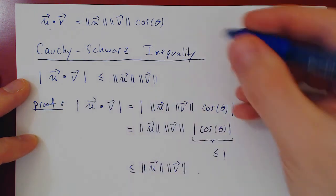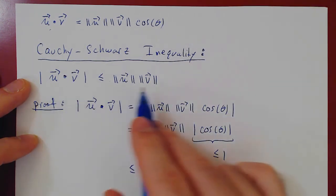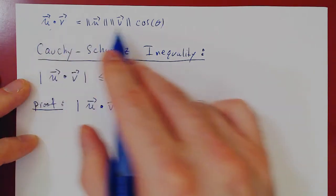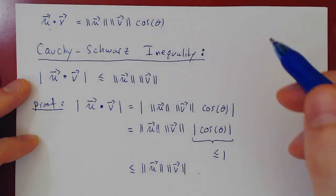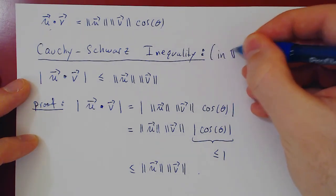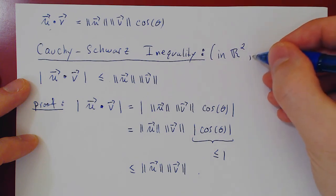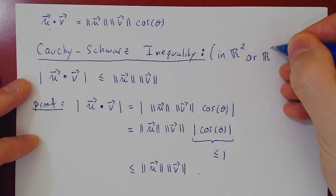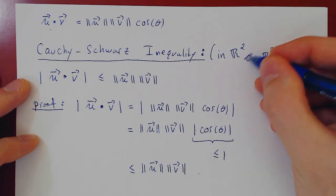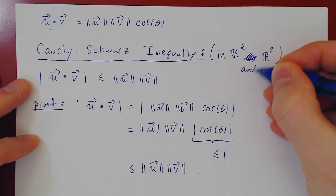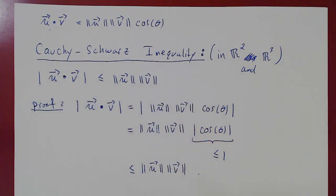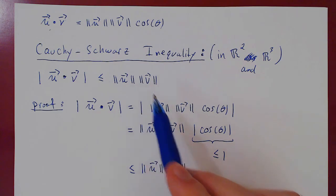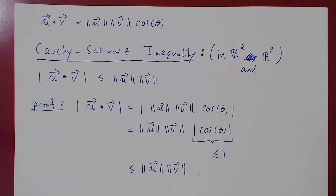This is called the Cauchy-Schwarz inequality. Right now this result holds for vectors in R2 or R3, since it depended on our geometric equality. As we will show later, the inequality is still valid no matter how many components your vectors may have — for any Rn.